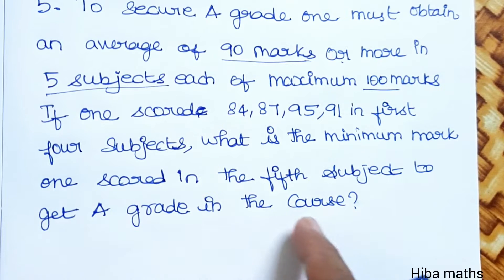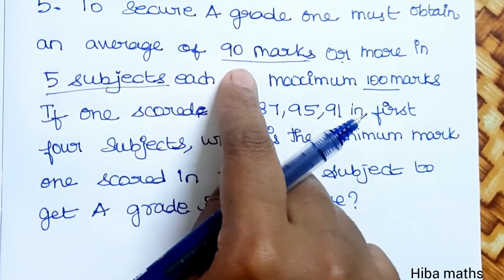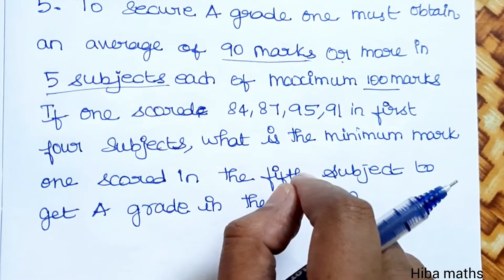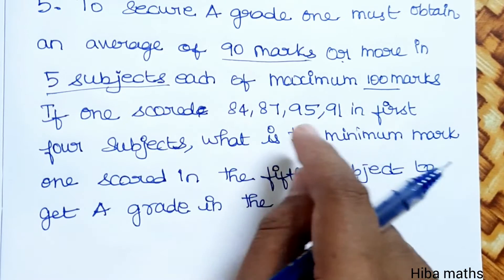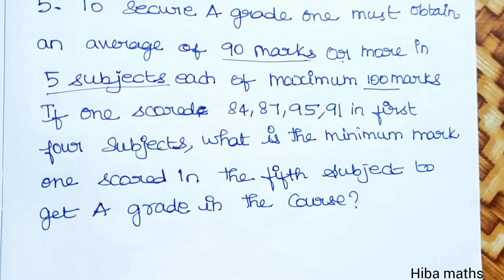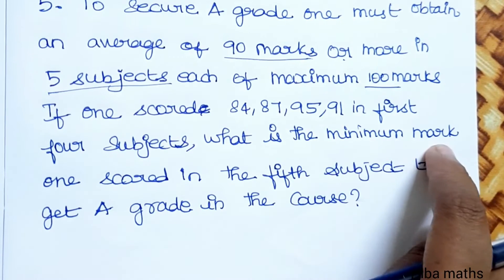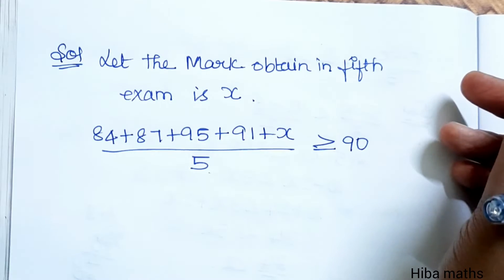So if one student is going to get A grade, then the average mark is going to be 90 marks or more. To find the average, add the marks and divide by 5. If one student is going to be greater than or equal to 90 marks and the first 4 subjects are 84, 87, 95, 91, we need to find the minimum mark in the fifth subject to achieve an average of 90 marks.